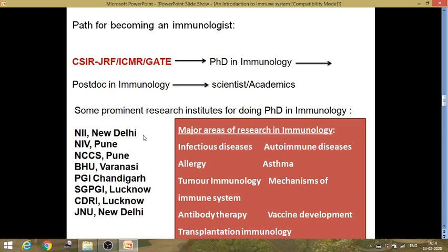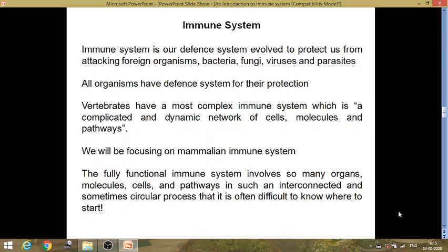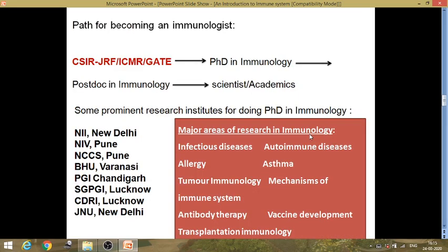The major areas of research in immunology include infectious diseases, autoimmune diseases, allergy and asthma, tumor immunology, mechanisms of the immune system, antibody therapy, vaccine development, and transplantation immunology. If you do research in any of these areas, you will become an immunologist. That was the introduction to immunology for today.